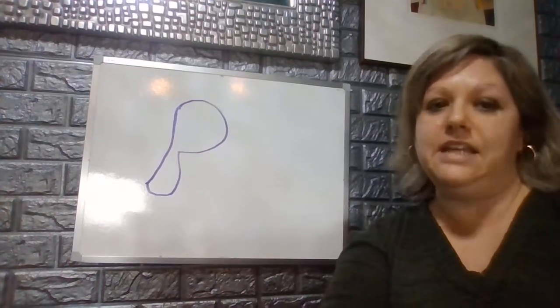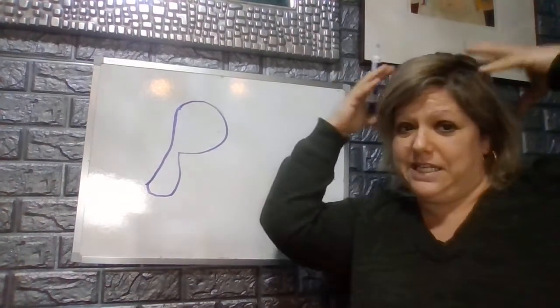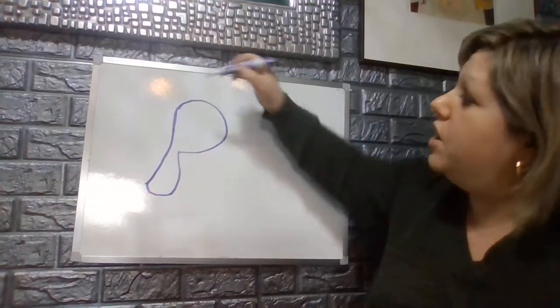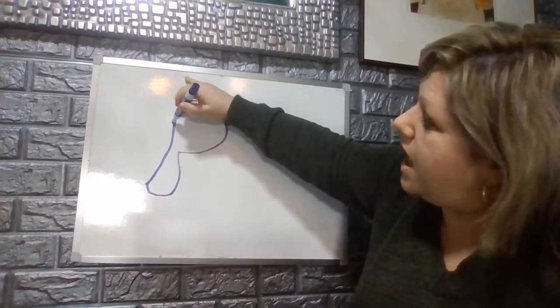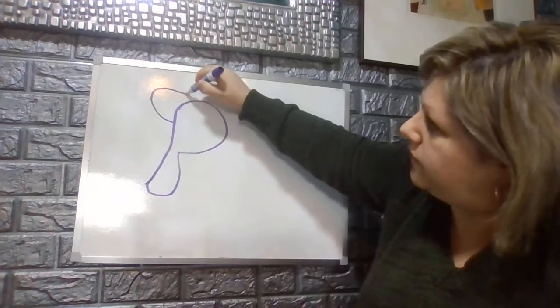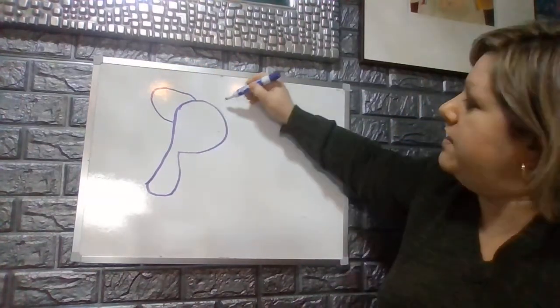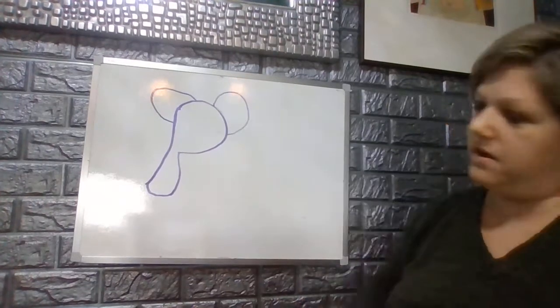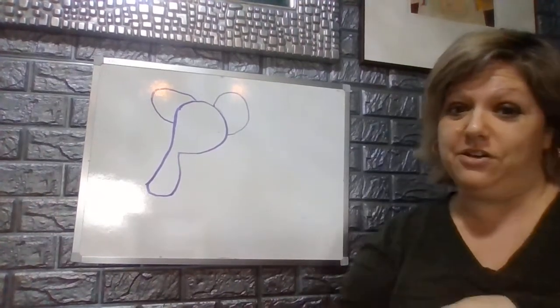The next thing we're going to do is we're going to make its ears. An elephant has two very large ears. So I would like you to make a hill on the left side and then a hill on the right side. So now our elephant has his ears.